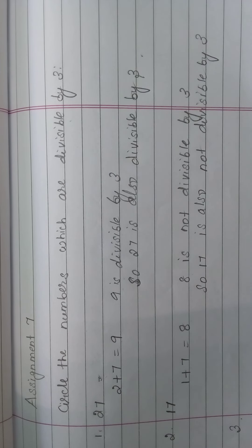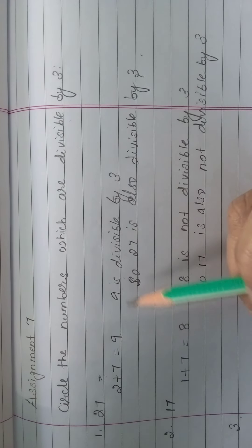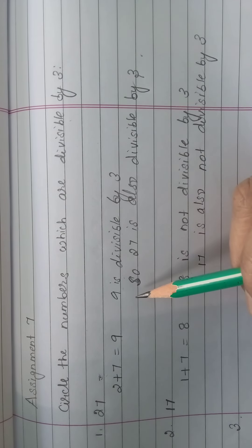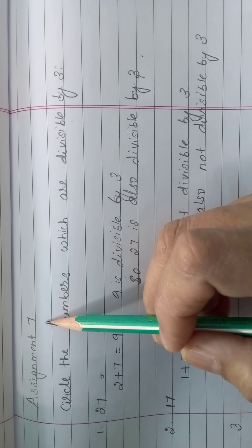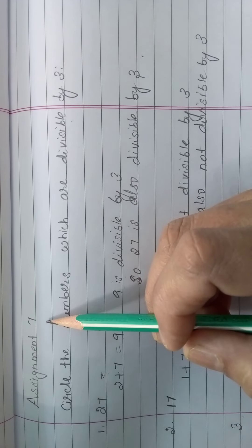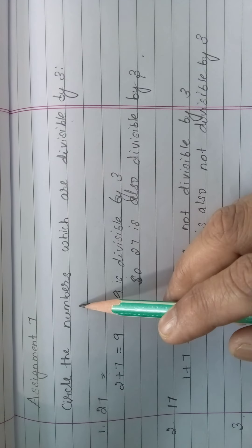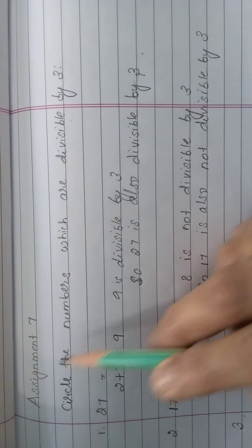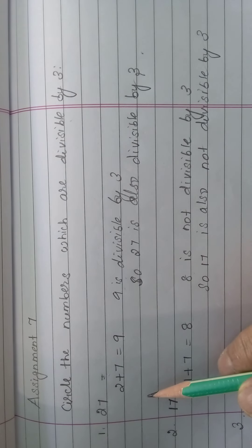Hi children, welcome to V.A.N. school. I am Maitly here. Now I told you about the divisibility test and how to do it in classwork. You should do assignment 7. Write like this and circle the numbers which are divisible by 3. Write the heading like this and take each and every number in the column.